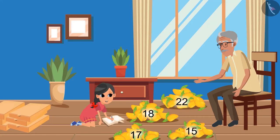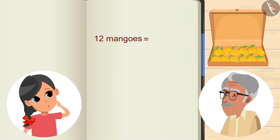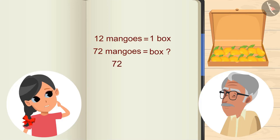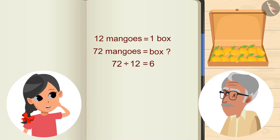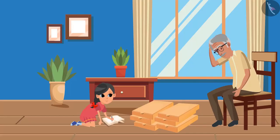Grandpa, how many mangoes can be placed in a box? The boxes can have a dozen of mangoes — that means a box will contain 12 mangoes. Then how many boxes will contain 72 mangoes? On dividing 72 by 12 we get six, so six boxes.